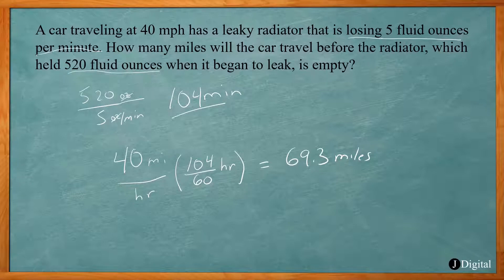We basically use our distance equals velocity equation where our velocity was the 40 miles per hour and our time was 104/60th of an hour. Simply multiply the speed times the time to get 69.3 miles.